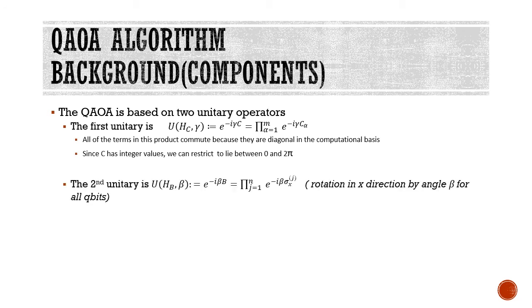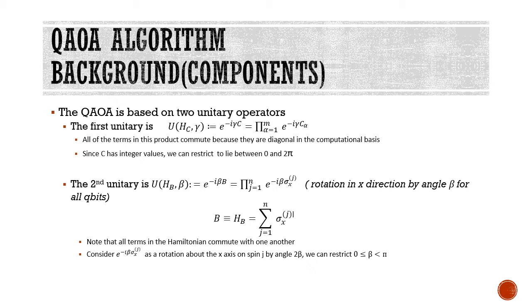Before we introduce QAOA, we introduce two unitary operators U(Hc, gamma) and U(Hb, beta). Gamma and beta are angles which are used to rotate the state vector of the quantum circuit. We define these unitary operators as e^(-i*gamma*C) and e^(-i*beta*B).